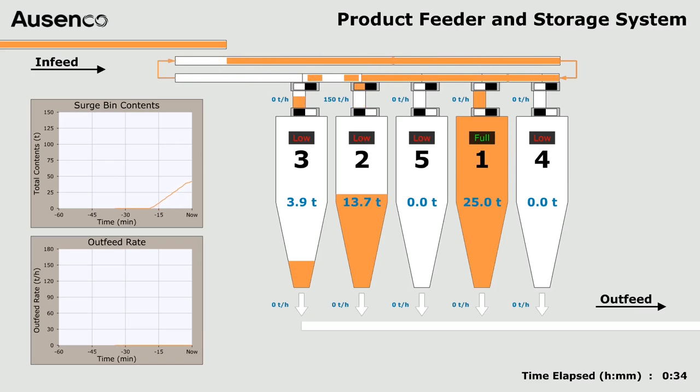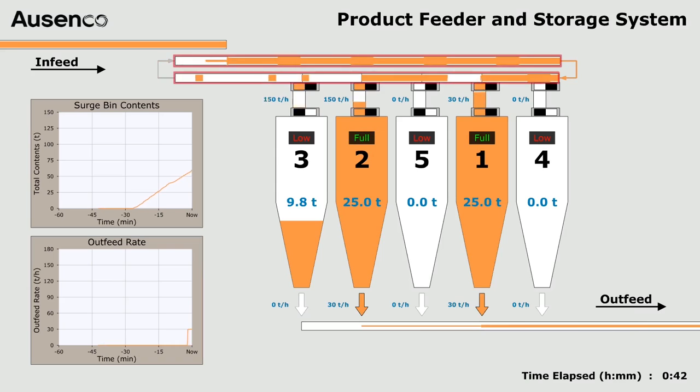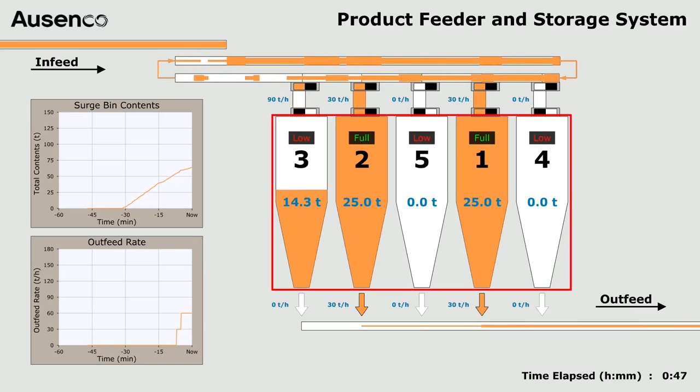This video shows the startup sequence of a wood pellet feeder and storage system. Pellets are transported by a recirculating distribution conveyor and fed into surge bins in numerical order.